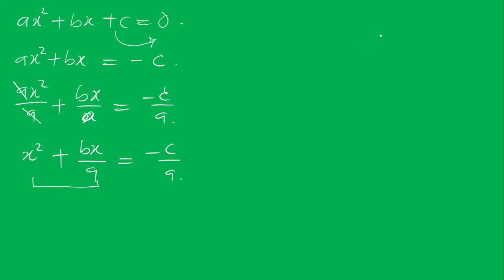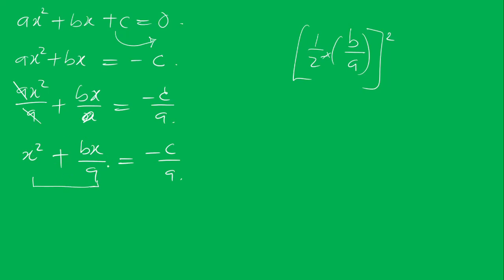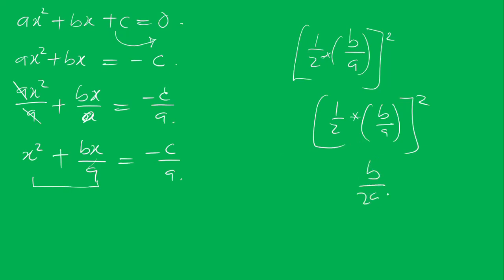To make the left-hand side a complete square, we add the square of half the coefficient of x to both sides. That is, we add b over 2a, all squared, to both sides. So we have x² plus bx over a plus (b over 2a)² equals minus c over a plus (b over 2a)².